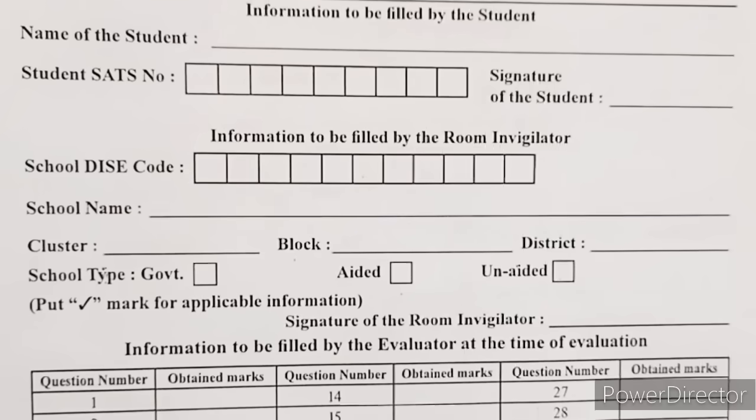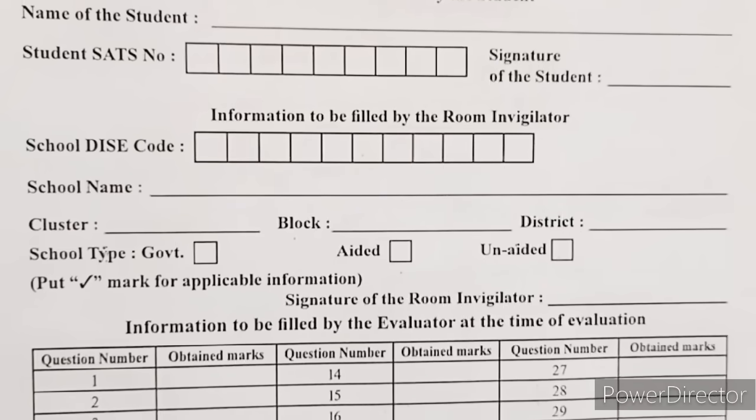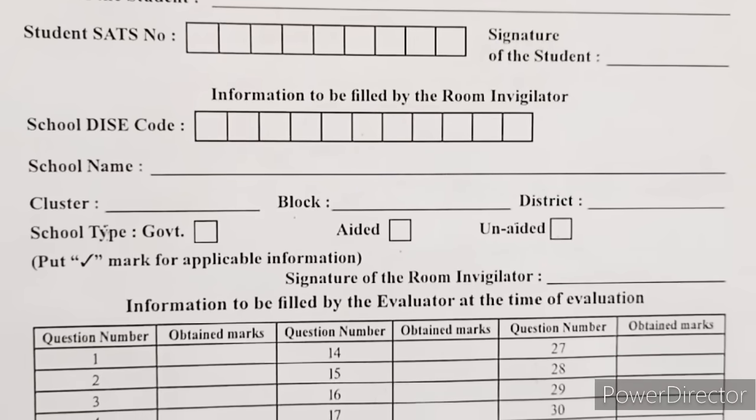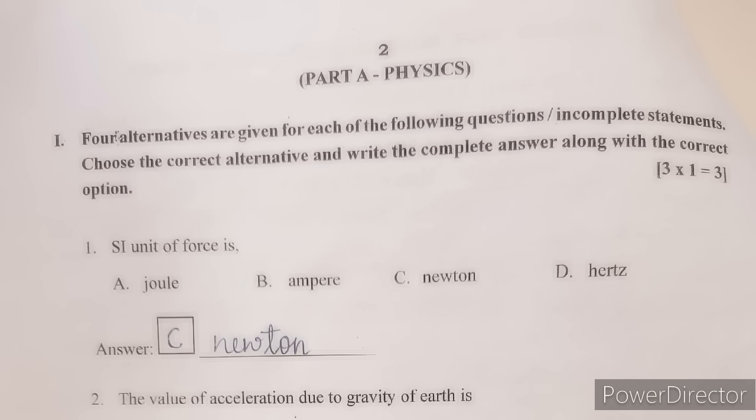Coming into the question paper, we have three parts in it: physics, chemistry and biology. First, we have Part A, physics. First main: four alternatives are given for each of the following questions or incomplete statements. Choose the correct alternative and write the complete answer along with the correct option.